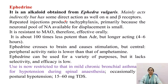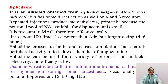Ephedrine is an alkaloid obtained from Ephedra vulgaris and acts mainly indirectly as well as directly on alpha and beta receptors. Repeated injection produces tachyphylaxis because the neuronal pool of norepinephrine available for displacement becomes small. It is resistant to monoamine oxidase enzyme, so it is orally effective and about 100 times less potent than adrenaline but longer acting for 4–6 hours. Ephedrine crosses the blood-brain barrier and causes CNS stimulation, but its central-to-peripheral activity ratio is lower than amphetamine. Currently its use is restricted to mild chronic bronchial asthma, hypotension during spinal anesthesia, and occasionally postural hypotension. Dose: 15–60 mg.